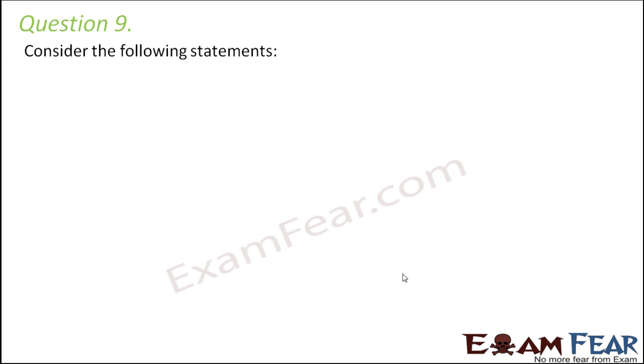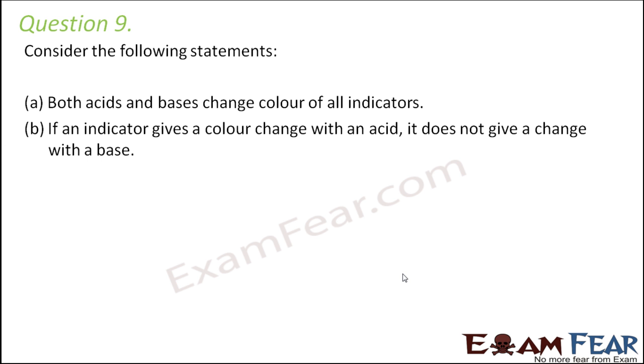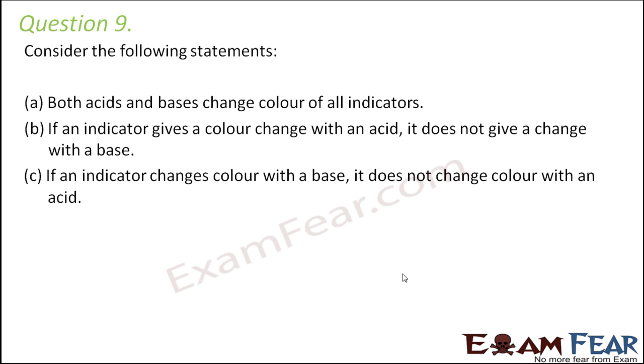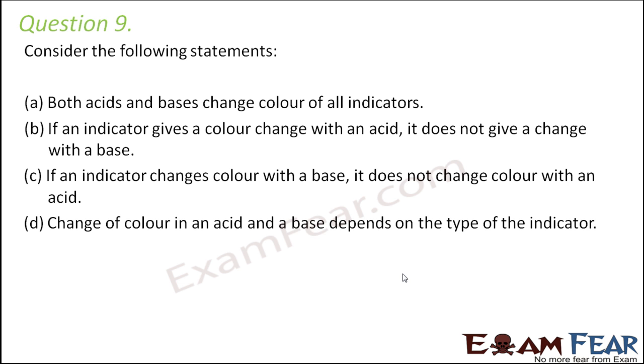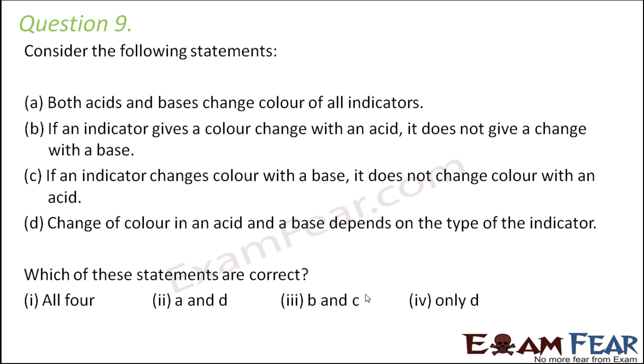Question number 9. Consider the following statements. Both acids and bases change color of all indicators. If an indicator gives a color change with an acid it does not give a change with a base. If an indicator changes color with a base it does not change color with an acid. Change of color in an acid and a base depends on the type of the indicator. Now out of these statements which one is correct and then you have four options. So let's analyze the statements one by one.